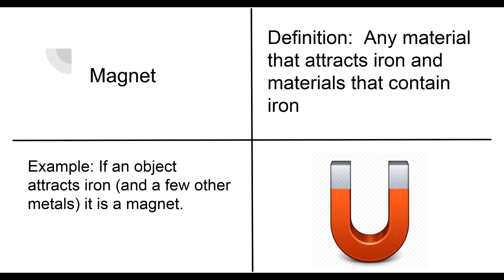Our first word that we're going to talk about is magnet. So our definition is any material that attracts iron and materials that contain iron. And for our sake, that's as specific as we need to get.